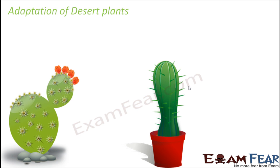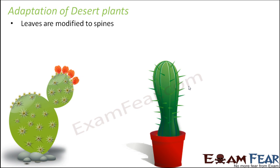In desert areas, the plants found there are very different from those in forest areas. These plants have specifically adapted to survive in the desert. In many of these plants, especially cactus, the leaves have been modified to spines — because water loss from spines is less than from leaves, where transpiration occurs through the stomata.